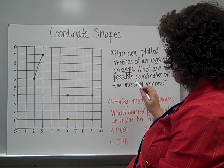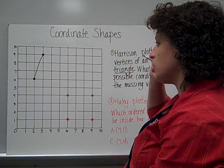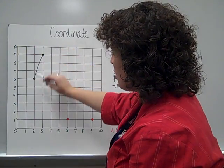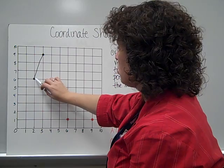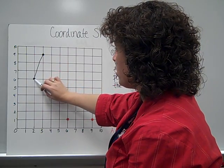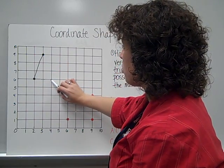So the question is what are the possible coordinates of the missing vertex? Well, if my triangle was diagonal here. I'm presuming it would be straight across here.